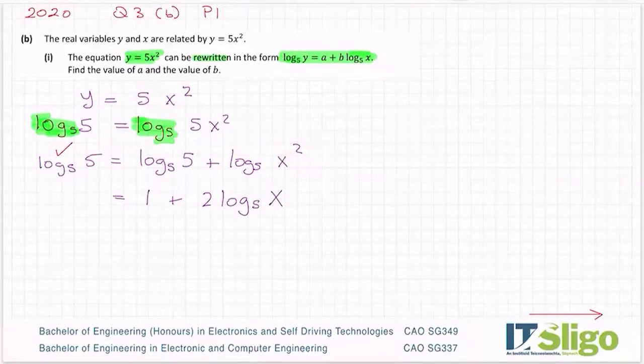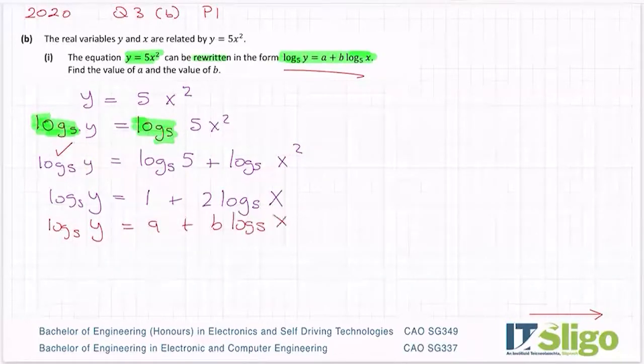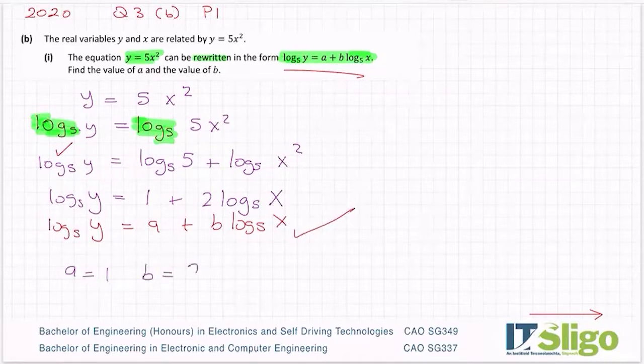Let's compare them now to this. Log to the base 5 of Y equals A plus B log to the base 5 of X. And I'm happy with that. A is 1, B is 2. So just wondering, can you use the rules of logs? That's what it's asking.